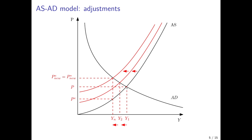Employment returns to a level consistent with the natural output level. The economy converges back from the short run overheating equilibrium to one where actual output equals natural output, price expectations equal actual prices, and we have a new, higher price level equilibrium. Due to the overheating, prices increased and price expectations increased, but actual output in the medium run did not increase. The economy converged back to natural output, but now with higher price pressures and higher price expectations of labor unions.